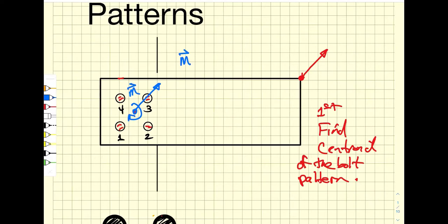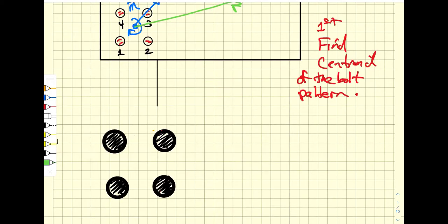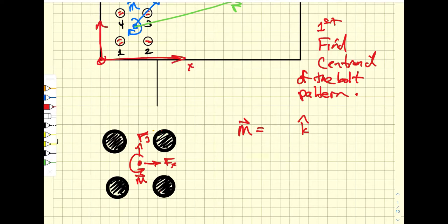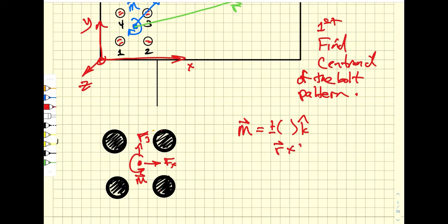Transferring the force to the centroid also generates a moment about that centroid. That moment is an R cross F term, where R is the vector from the centroid out to the applied force. So I have to find the centroid, find the moment — and the moment is always a z-directed (k-directed) moment, either positive or negative, depending on R cross F.